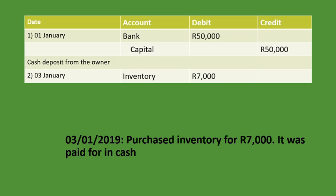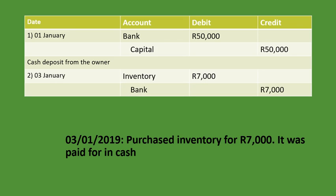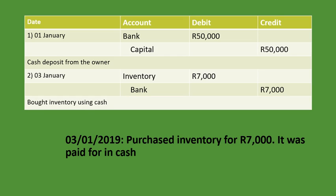The second account is bank. Money is going out because we are paying to get the inventory — we are buying it using cash. So we put bank and we put 7,000 rand on the credit side. Let's put our description: bought inventory using cash. You can see how simple this is — you just have to understand the principle behind it.